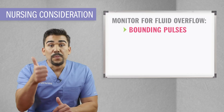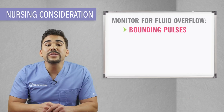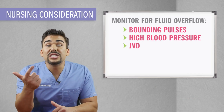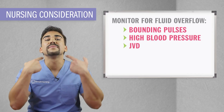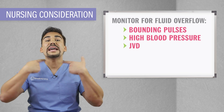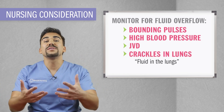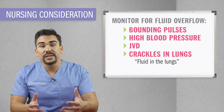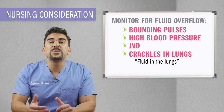Signs and symptoms for fluid volume overload to watch out for: big bounding pulses, high blood pressure, JVD — jugular vein distension in the neck — crackles in the lungs, basically fluid in the lungs, and possible edema. Please be cautious when administering this fluid.